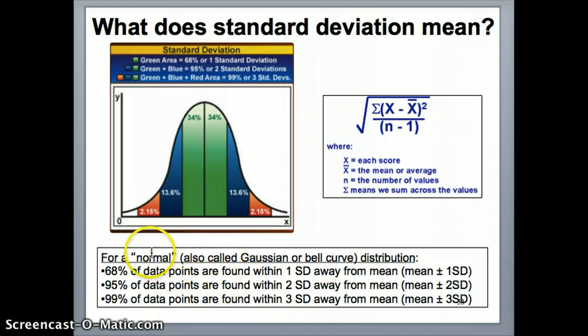Now, for a normal, what we refer to as a normal distribution, normal in this case means this bell curve type distribution. In theory, you're supposed to have 68% of your data points within one standard deviation away, and 95% of the data points should be within two standard deviation away.